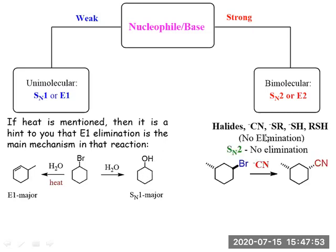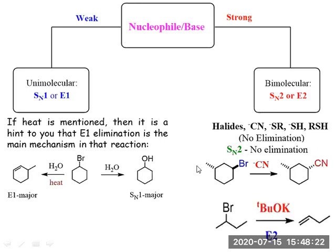If leaving groups or groups like halides, cyanide, SR, or SH are present, substitution generally takes place rather than elimination. Smaller leaving groups favor substitution over elimination. For example, with CN⁻ as nucleophile, Br is displaced and you get the SN2 product. But if the base size is changed — for instance, using tertiary butoxide — it acts as a base and elimination takes place instead.